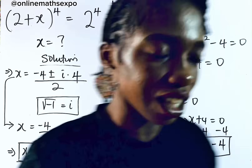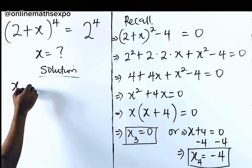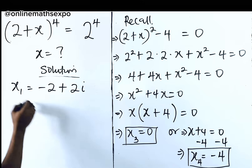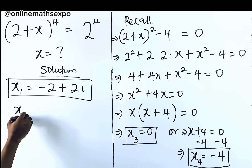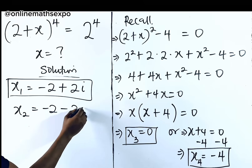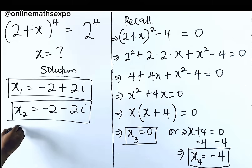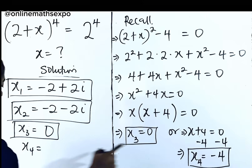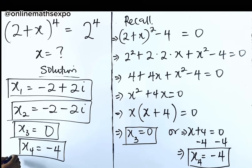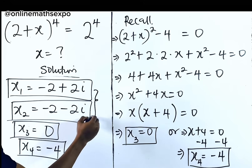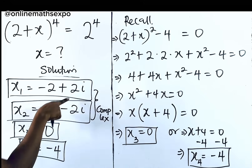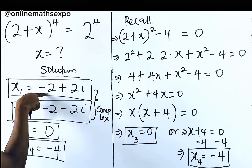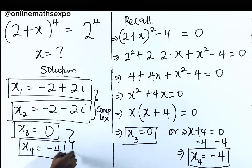Gathering all values of x: the first is x = −2 + 2i, the second is x = −2 − 2i, the third is x = 0, and the fourth is x = −4. As expected for a degree-4 equation, we have four solutions. The first two are complex solutions containing both real and imaginary parts, while x = 0 and x = −4 are real solutions found on the number line.